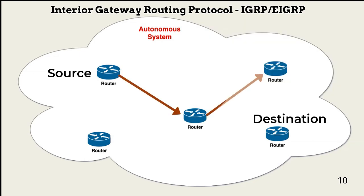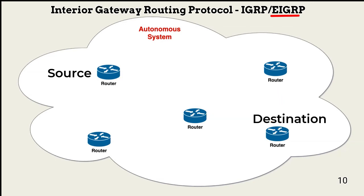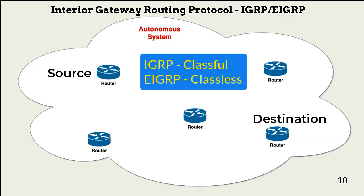EIGRP, or Enhanced Interior Gateway Routing Protocol, is also a distance vector protocol that routes within an AS. The difference between these two protocols is the routing technique: IGRP uses classful routing, and EIGRP uses classless routing.